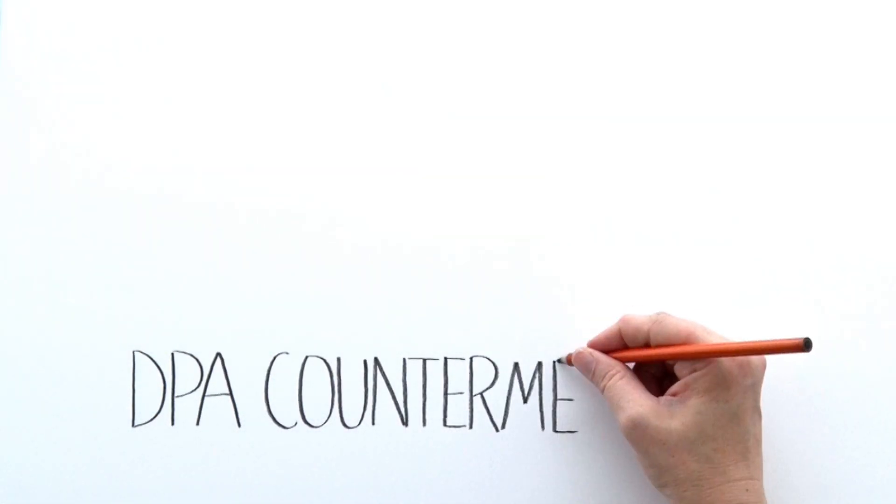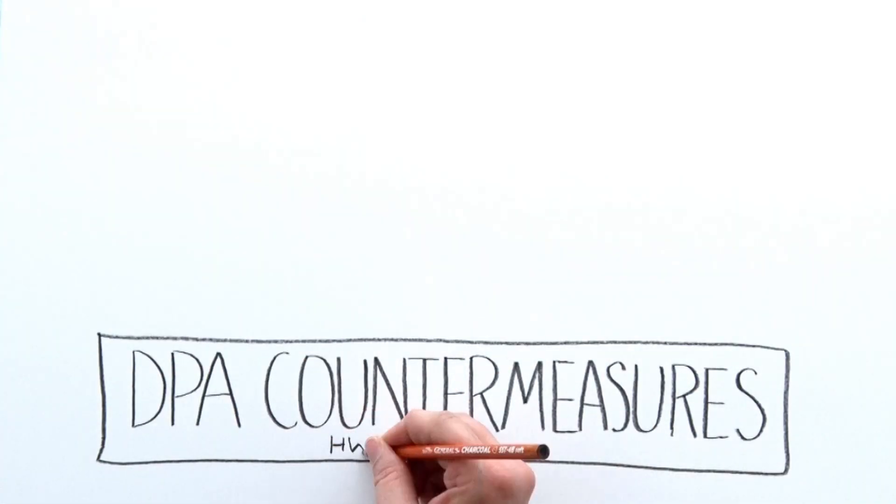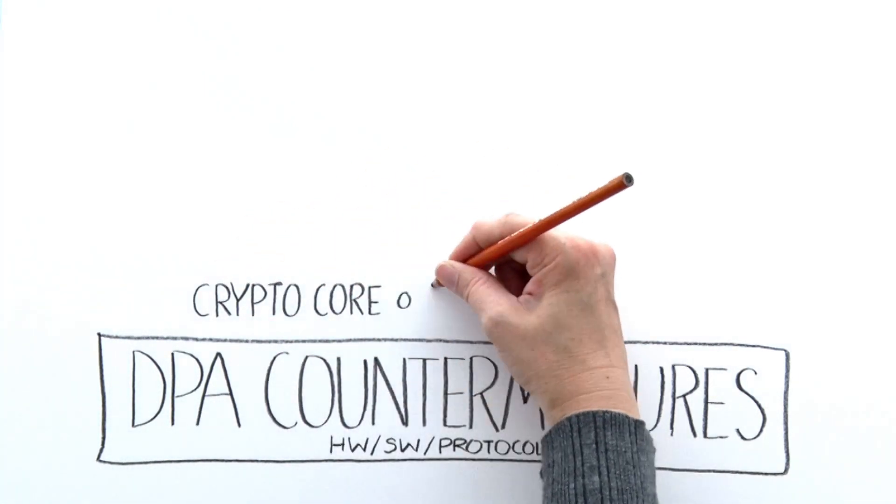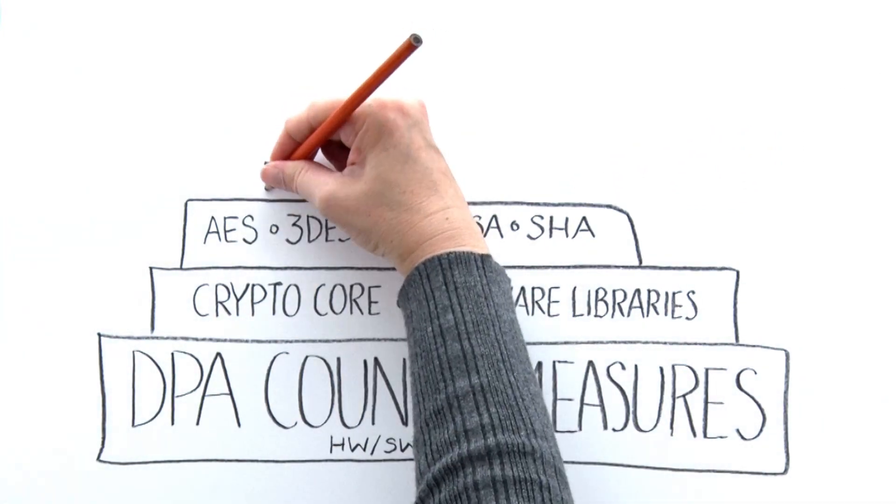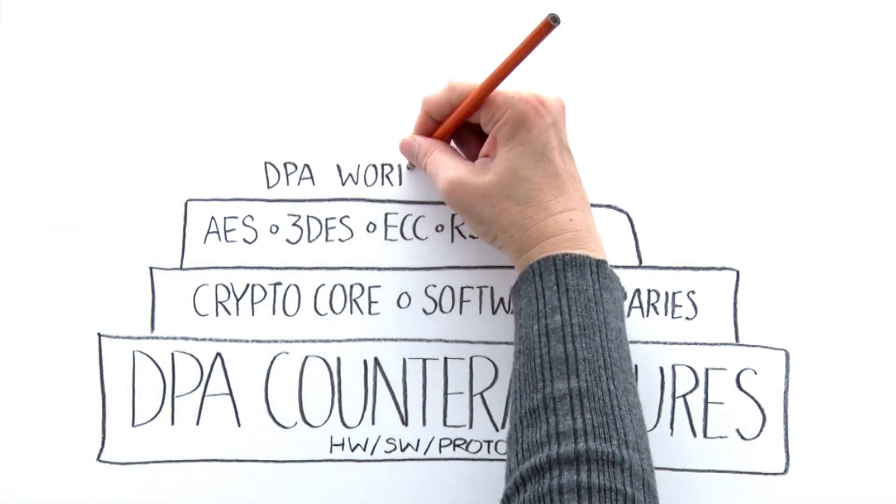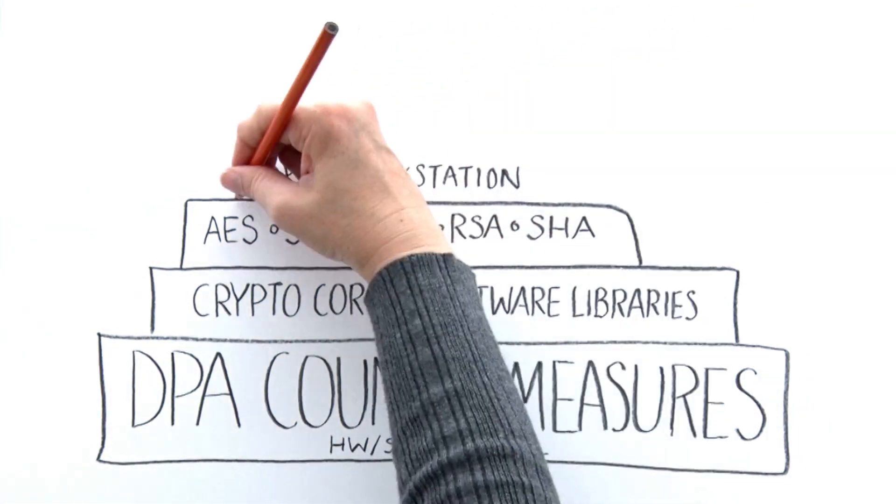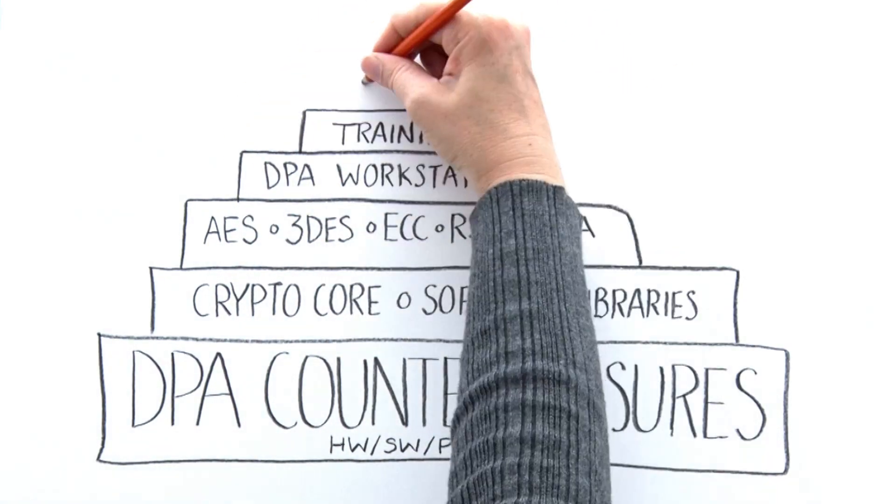Cryptography Research provides solutions that mitigate the threat of DPA attacks. Our full suite of solutions include support of all standard algorithms. In addition to DPA countermeasures, our licensees receive tools such as the DPA workstation testing platform and other services.